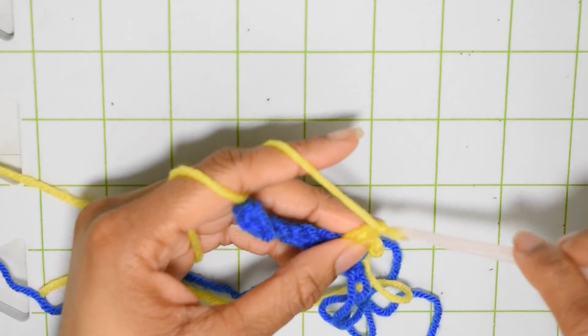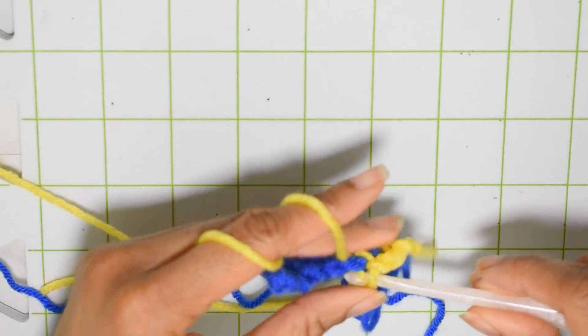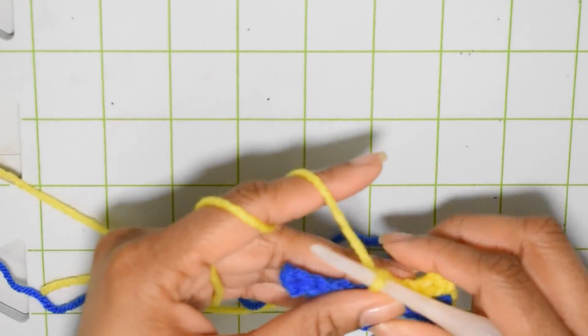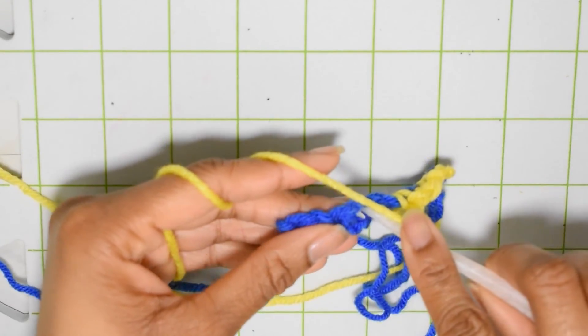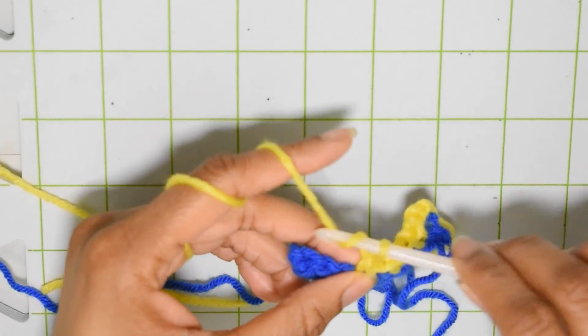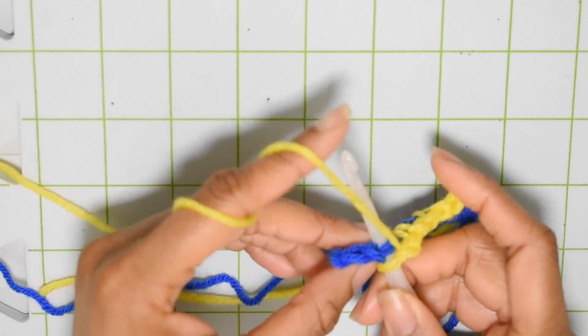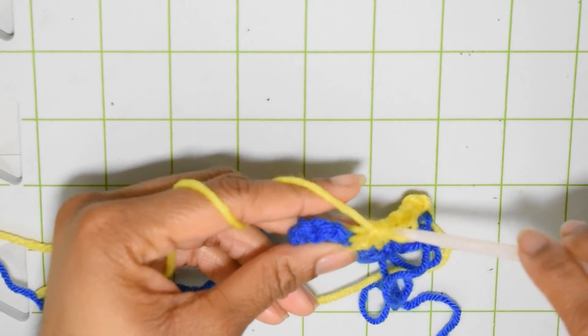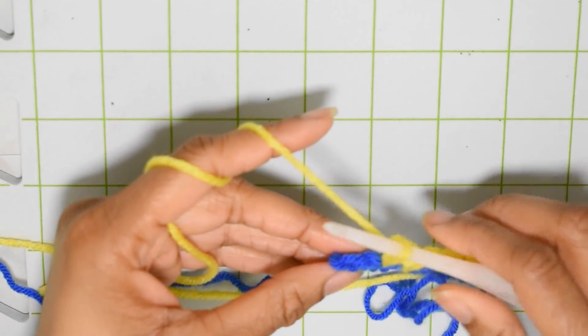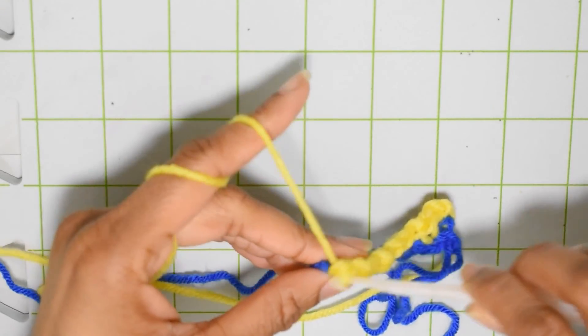And then we are going to chain one, skip the next stitch and work into the next chain space with a single crochet. And we are going to chain one, skip the next actual stitch, and we are going to insert into that chain one space and make a single crochet. And this is actually the repeat for all rows that you're going to do.